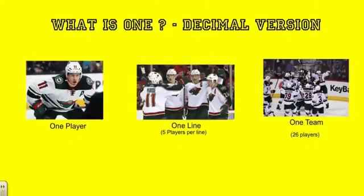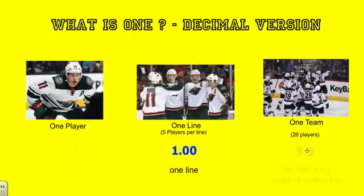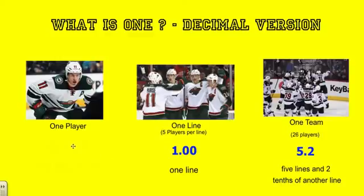Next, we're going to look at the hockey team from the decimal perspective. One line — 5 players per line — is going to be our 1.0. So 5 players on the ice is our 1. For the entire team, 26 players over 5 gives us our fraction. We do 26 divided by 5 and end up with 5 and a remainder of 2 tenths — so 5 whole lines and 2 tenths of another line. And one player is one-fifth of one line, so 1 divided by 5 is 0.2.